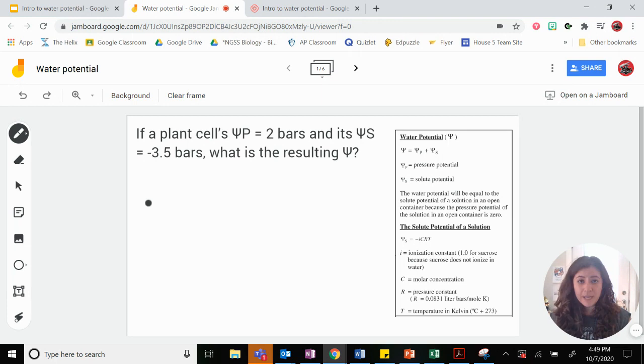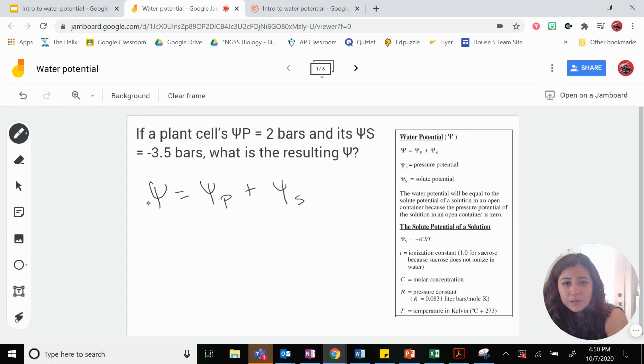So let's start by defining our terms. This one's easy. It's given us pressure potential and solute potential, so we just have to plug it into the formula. So water potential is going to be the pressure potential plus solute potential. So that's going to be two plus negative 3.5.